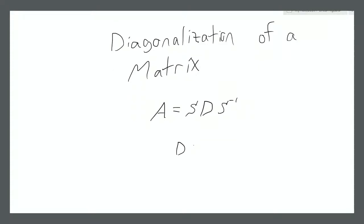D is a matrix of the form where we have some values along the diagonal — say if it's a 4x4 matrix, values A, B, C, D along the diagonal and everything else is a zero. So that's a diagonal matrix.